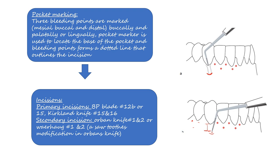The next step is incision. Here, primary incisions and secondary incisions are discussed along with the instruments used — this is important from the viva point of view. Primary incisions can be given with BP blade number 12B or 15, or Kirkland knives number 15 and 16. Secondary incisions can be given with Orban knife number 1 and 2, or Weirhog knife number 1 and 2. The Weirhog is a modification of the Orban knife — when the Orban knife contains a saw tooth, it becomes the Weirhog knife.